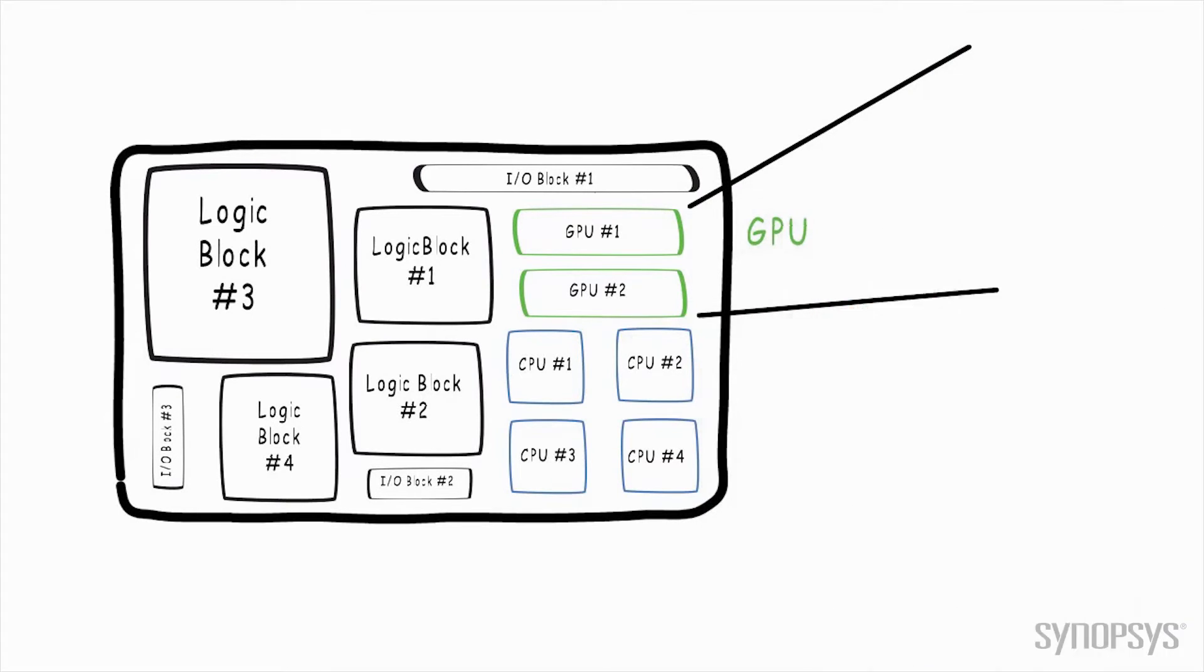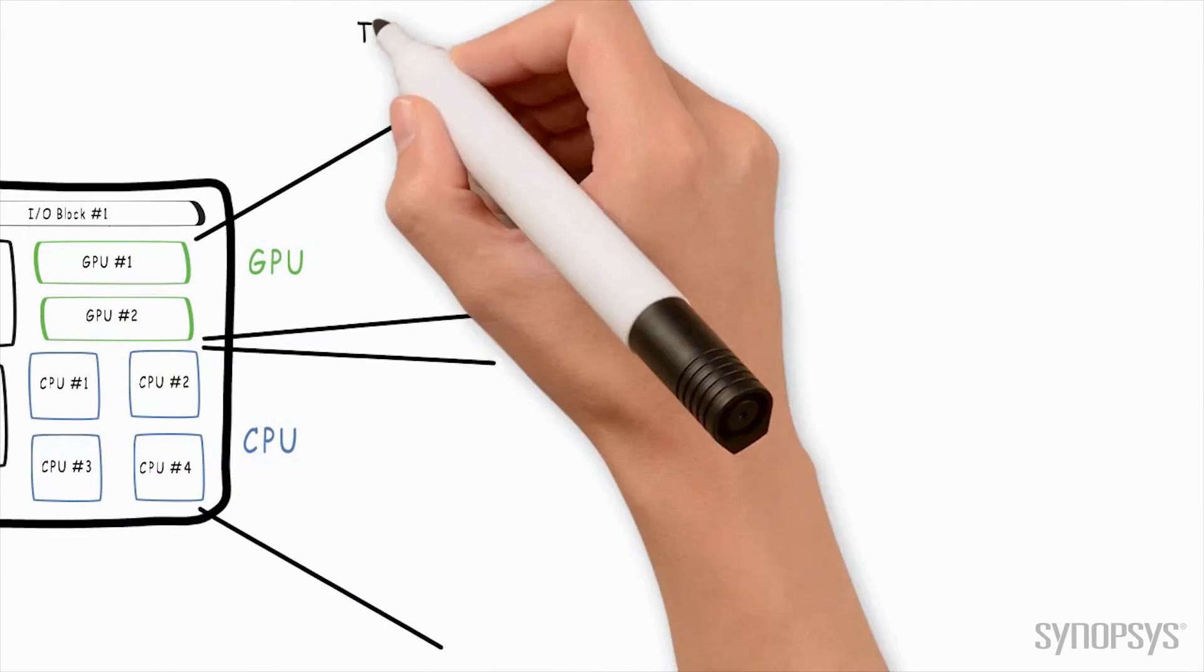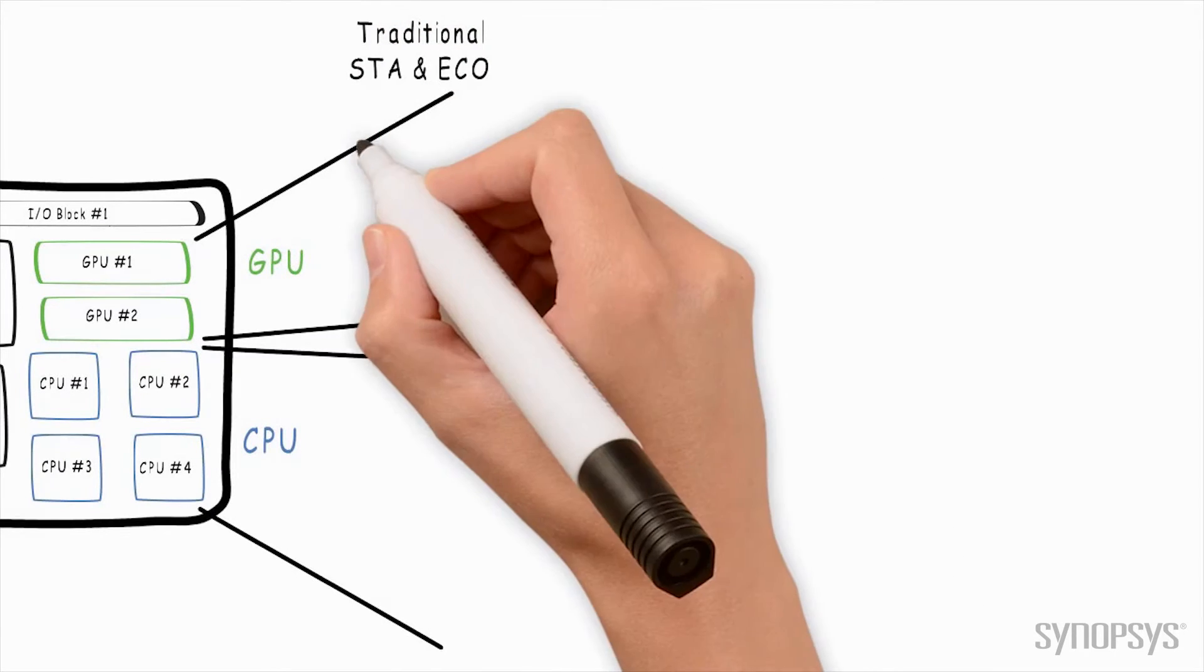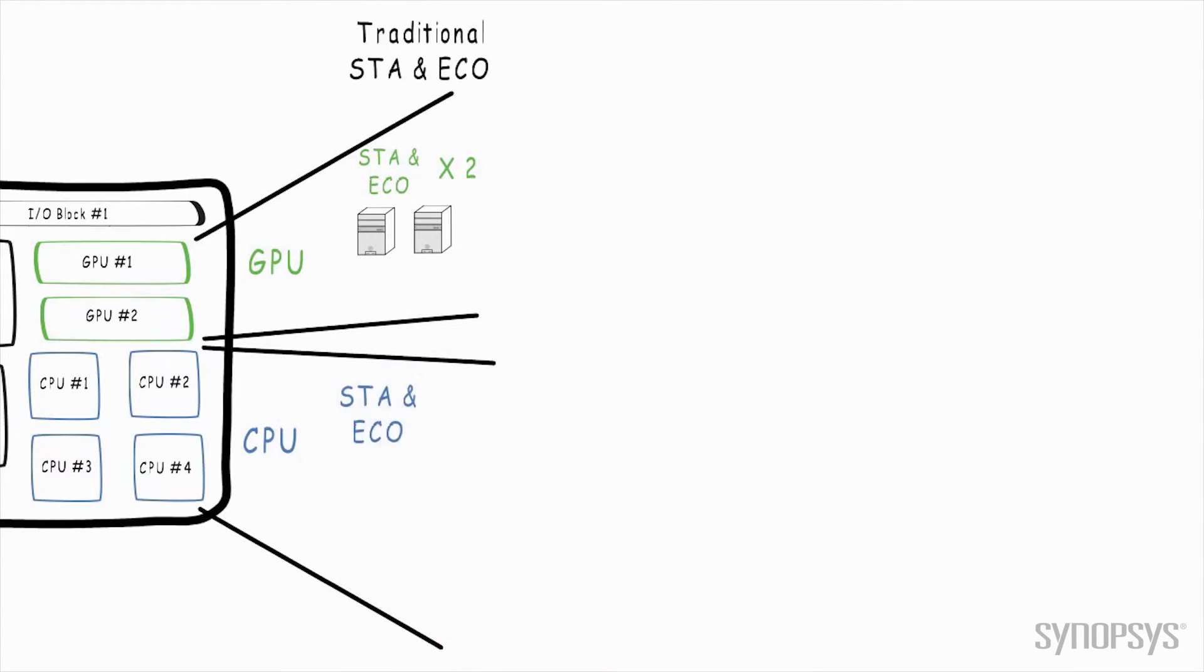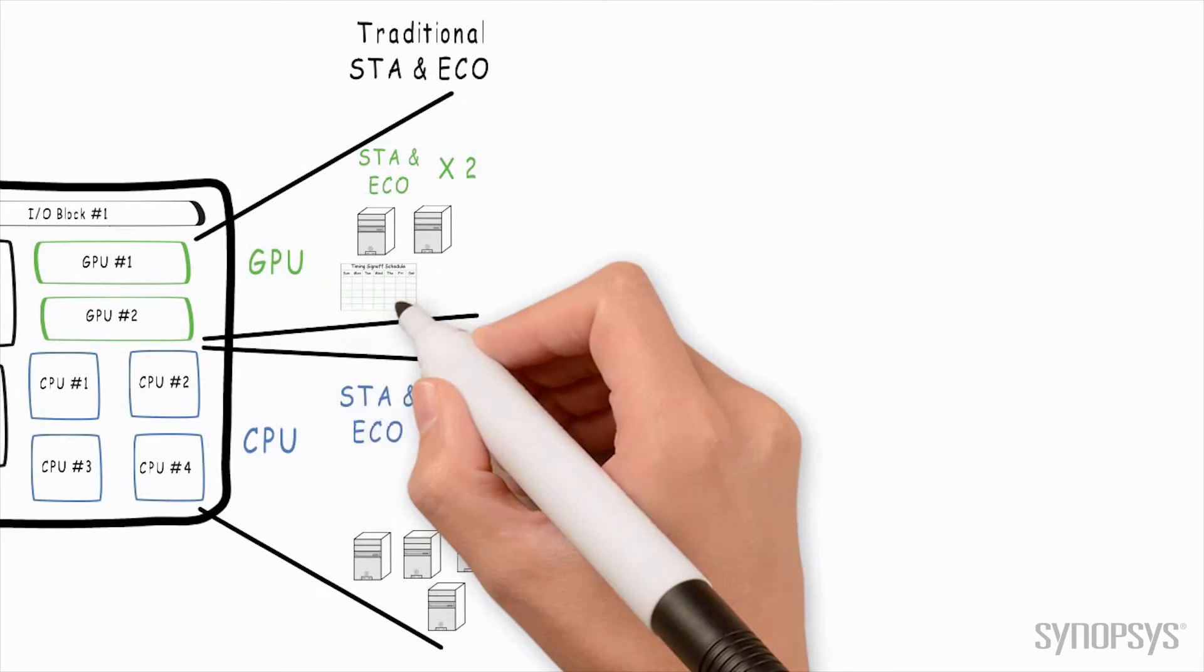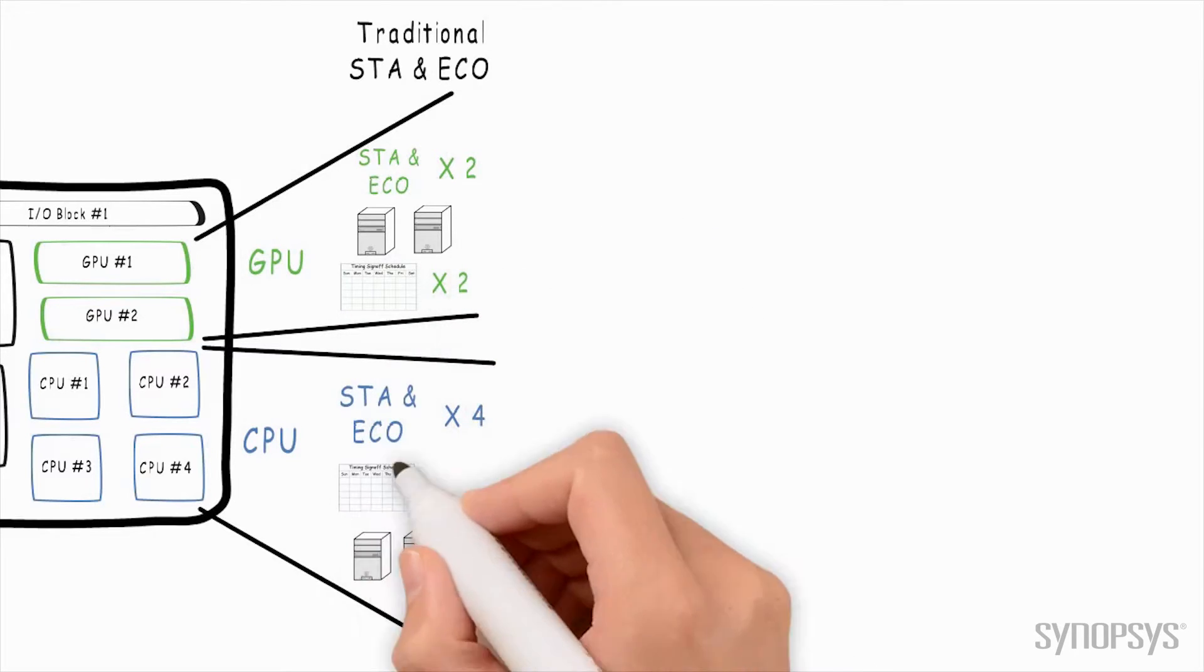Traditional block level timing analysis runs for sign-off and ECO are flat and require each MEM of each group to be analyzed separately, requiring many compute servers with large amounts of memory. These big machines are usually quite rare and often have a wait to access them. The time to perform all these runs on all these blocks can add weeks to your sign-off schedule.